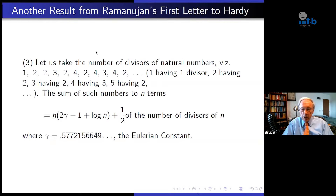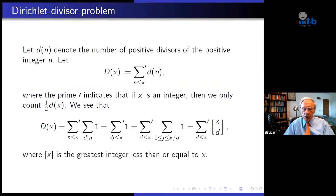Now I'm going to return to another result from Ramanujan's first letter to Hardy. We take the number of divisors of the natural numbers — one having one divisor, two having two, three having two, four having three, and so on. He says the sum of these up to n terms equals a certain expression plus one-half the number of divisors of n. This part of the formula is correct, but he was too optimistic about the error term. Gamma here is Euler's constant. We'll let D(n) be the number of positive divisors of n, so D(x) is our summatory function.